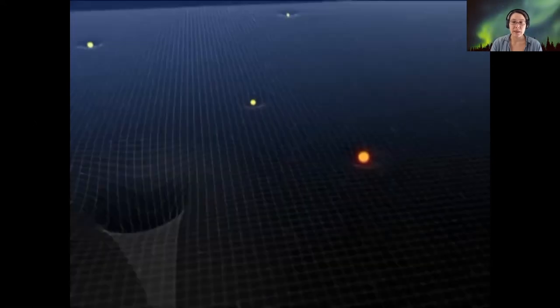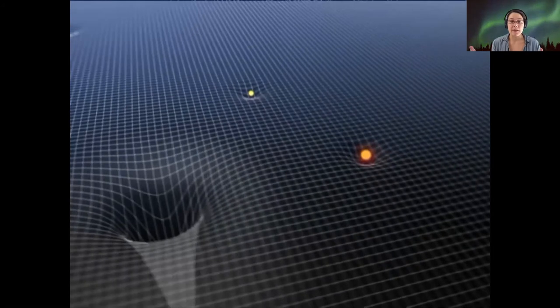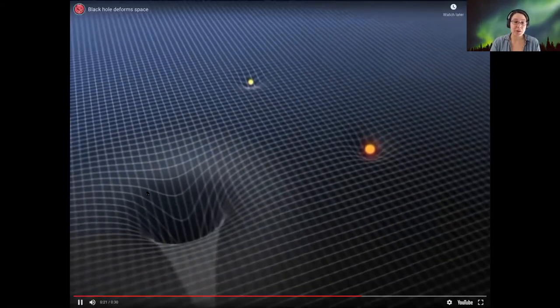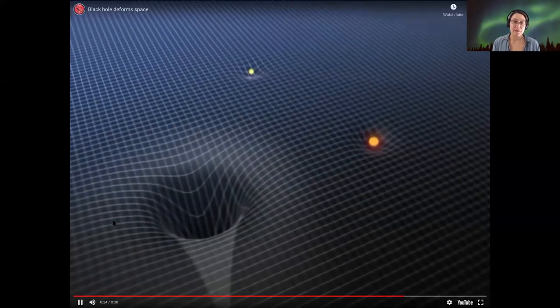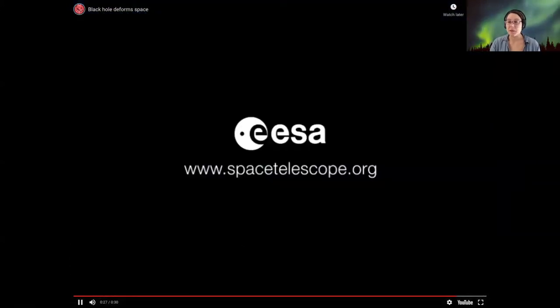And when we look at them as if they are embedded in spacetime, the orange star is deforming space more than the yellow stars. And then here, this invisible object, we didn't even see it when we were looking in the invisible range. This is a black hole where spacetime is bent infinitely.